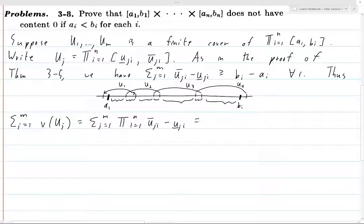And then here we can switch the order, because these are finite sums and finite products, we can just switch the order. uji upper minus uji lower. But now if you look at the sum from j equals 1 to m of uji upper minus uji lower, we just proved that that's always going to be greater than or equal to bi minus ai. So this is greater than or equal to the product multiplication from i equals 1 to n of bi minus ai. And then we're done.